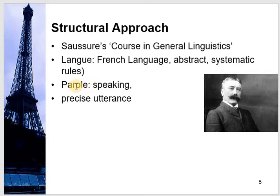So Ferdinand de Saussure mentioned primarily two things: Langue and Parole. Though he also discussed other elements studied earlier, such as paradigmatic and syntagmatic relationships.